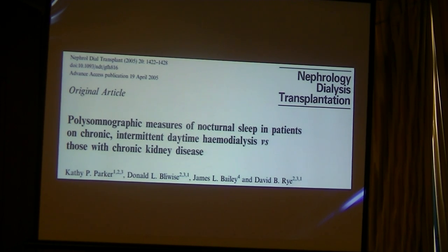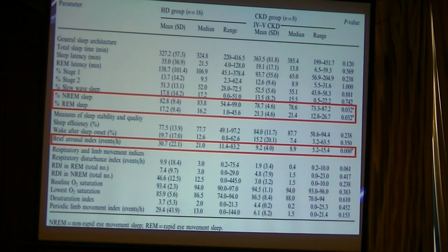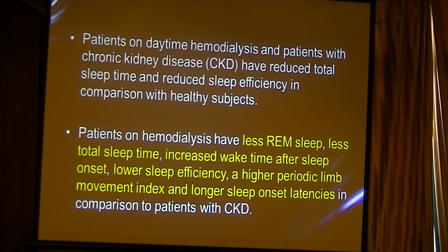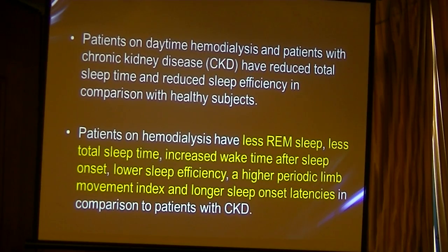Another study done in 2005 used polysomnographic measurement of sleep in patients with chronic intermittent hemodialysis versus those with chronic kidney disease. It showed that all chronic kidney disease patients had sleep disorders, but total sleep time and sleep architecture were much lower in the hemodialysis group. Patients on daytime hemodialysis and those with CKD had reduced total sleep time and sleep efficiency. Patients on hemodialysis had less REM sleep, less total sleep time, increased wake time after sleep onset, lower sleep efficiency, and a higher periodic limb movement index.